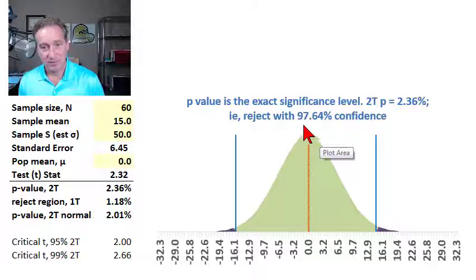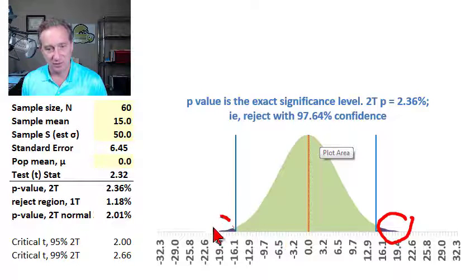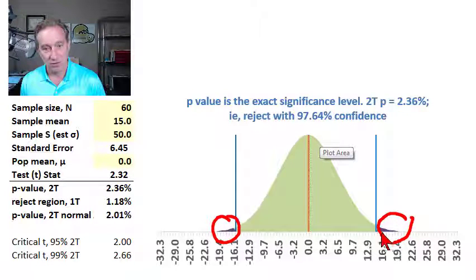I'm going to erase that, that we could reject with 97.64% confidence, because the 2.36% is the total area in the rejection region.